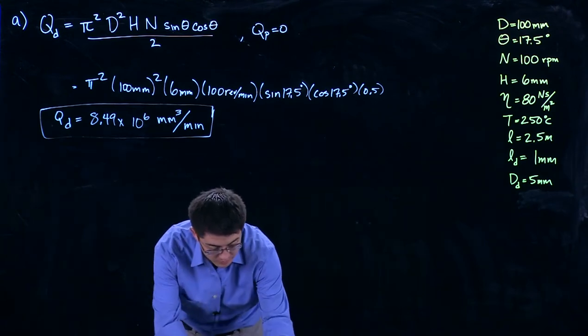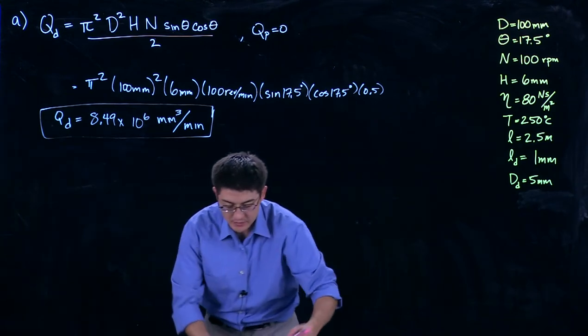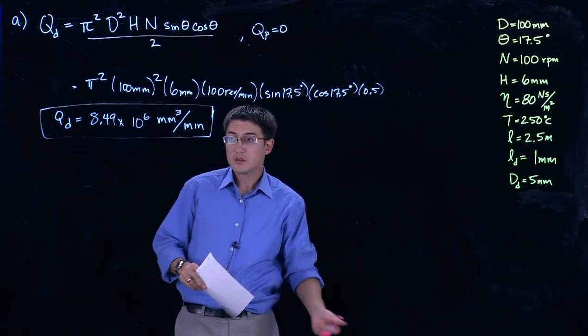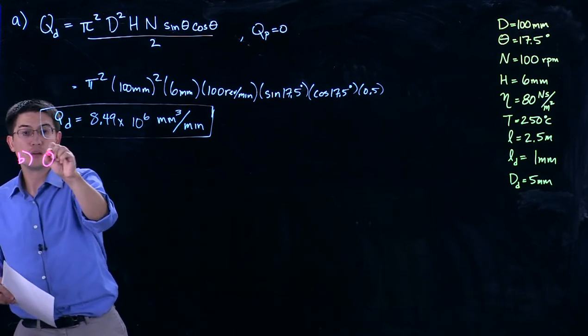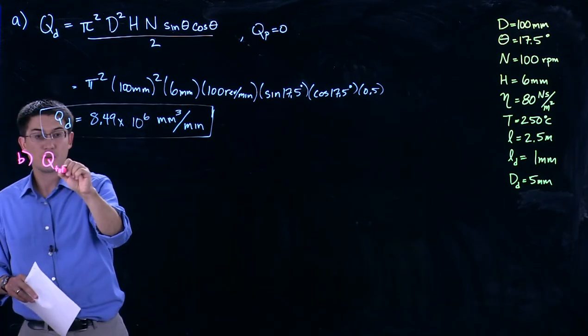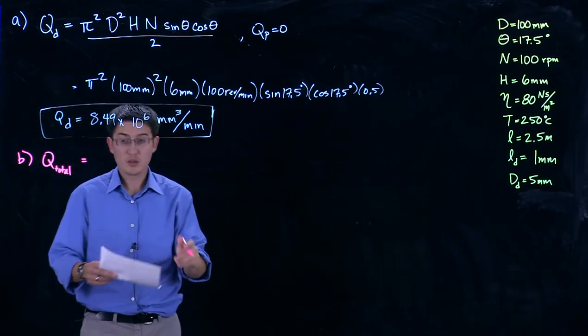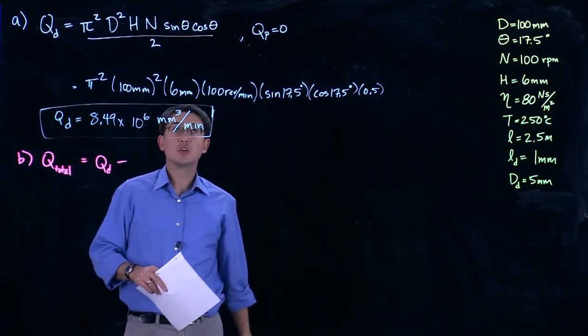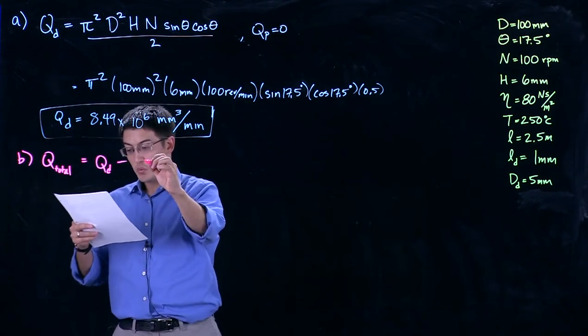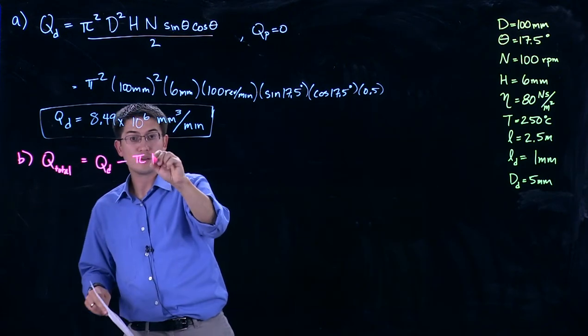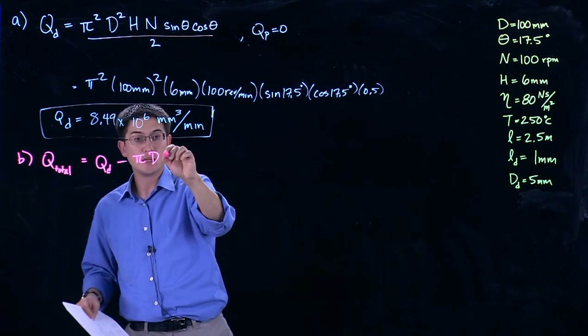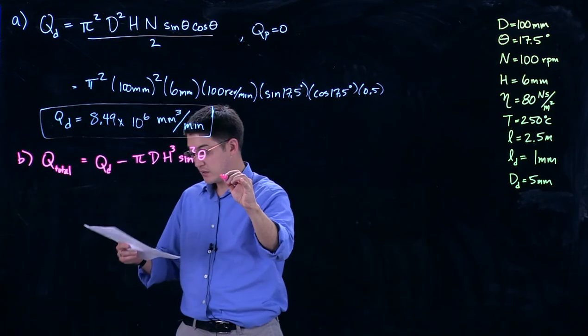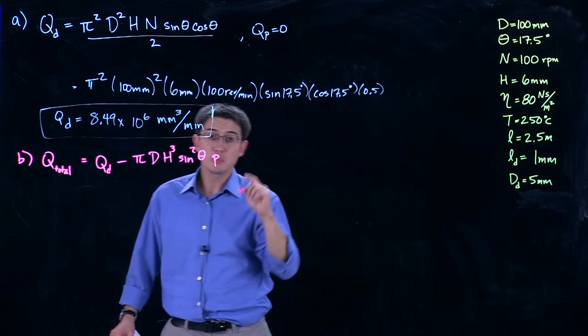The second part of this problem gives us information about the die. So we can set this up and say we're now going to stick a die on there. We have Qd minus Qp, which we can write out as pi times d times h cubed sine squared theta times the pressure. Pressure is something we don't know.